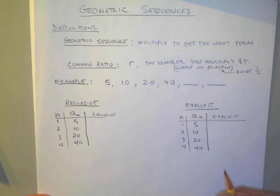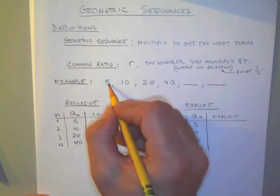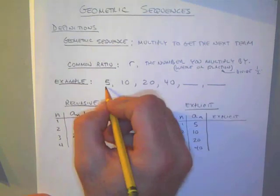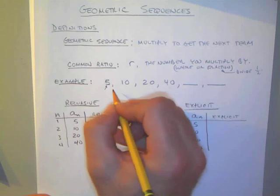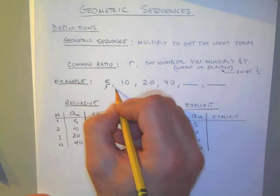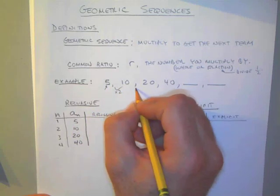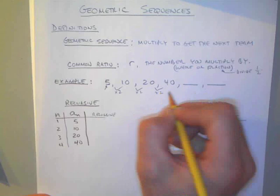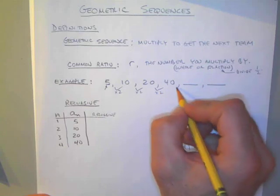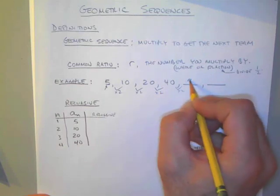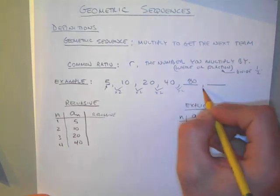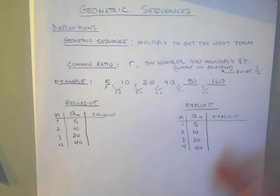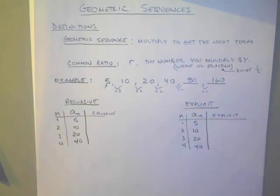So let's look at an example: 5, 10, 20, 40. I see we have a starting value of 5, and it looks like we are multiplying by 2 each time. So our next term, 40 times 2, will be 80, and then times 2 would be 160.